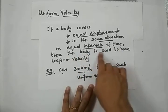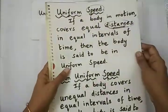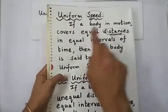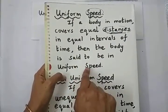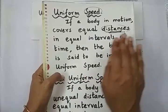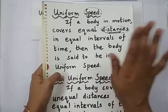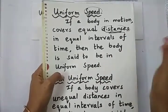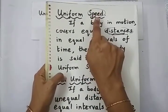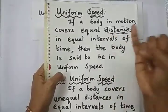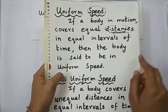We already know what uniform speed is — if a body covers equal distances in equal intervals of time, the body is said to have uniform speed. Suppose a car is moving at 30 kilometers per hour and maintains the same speed, we say it has uniform speed. But in the case of velocity, since it is a vector quantity, both the displacement and the direction should remain the same for uniform velocity.